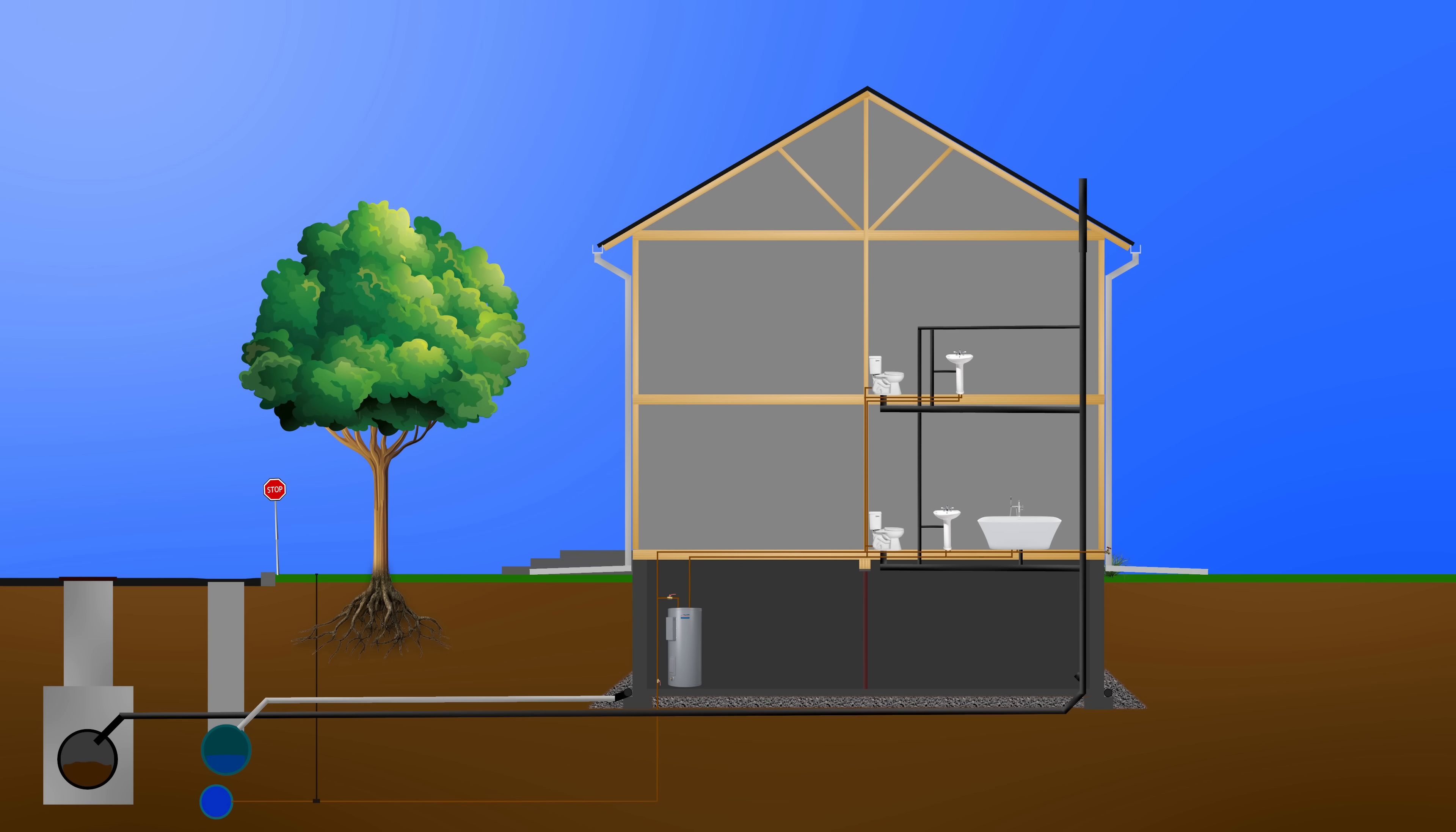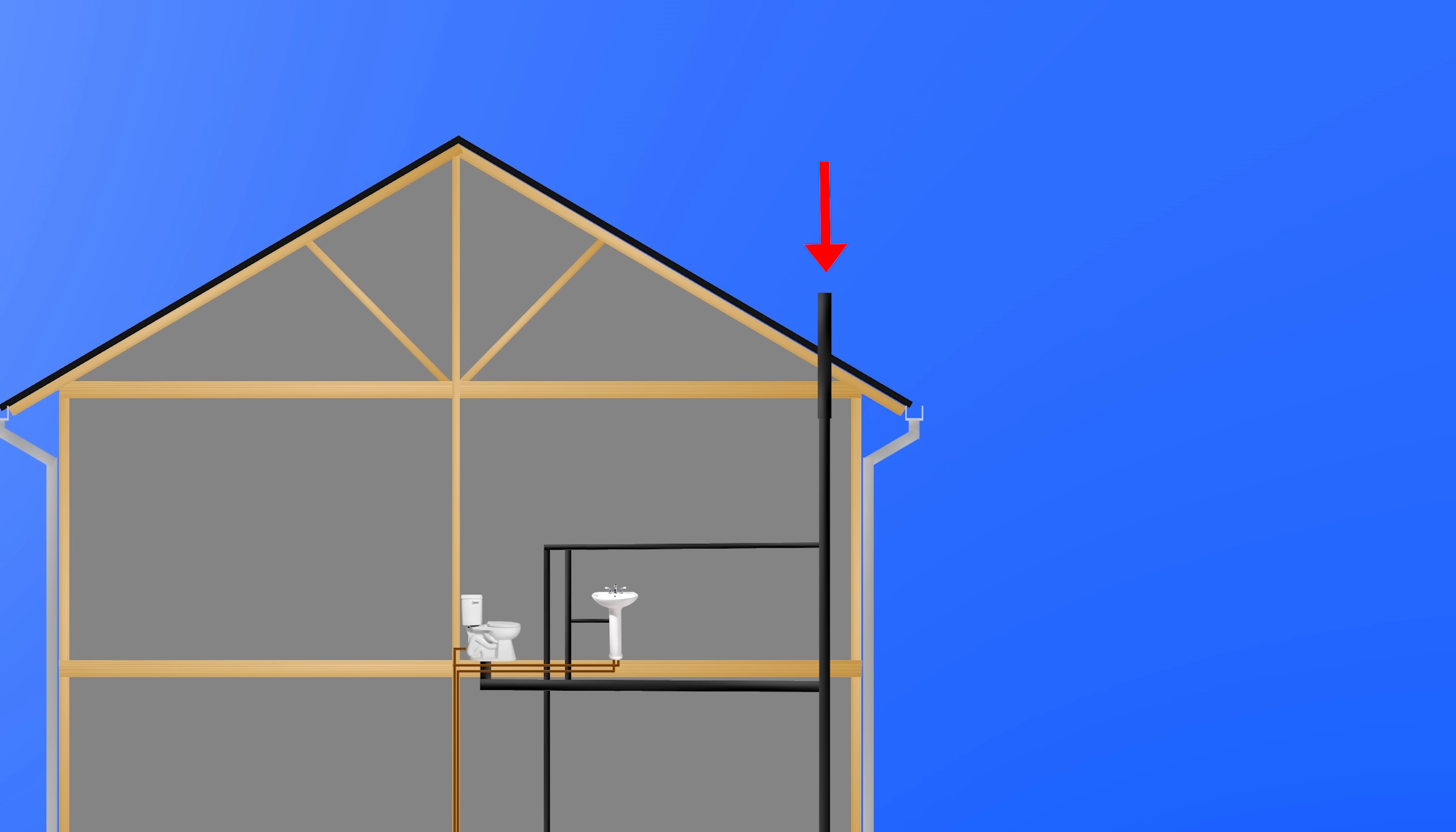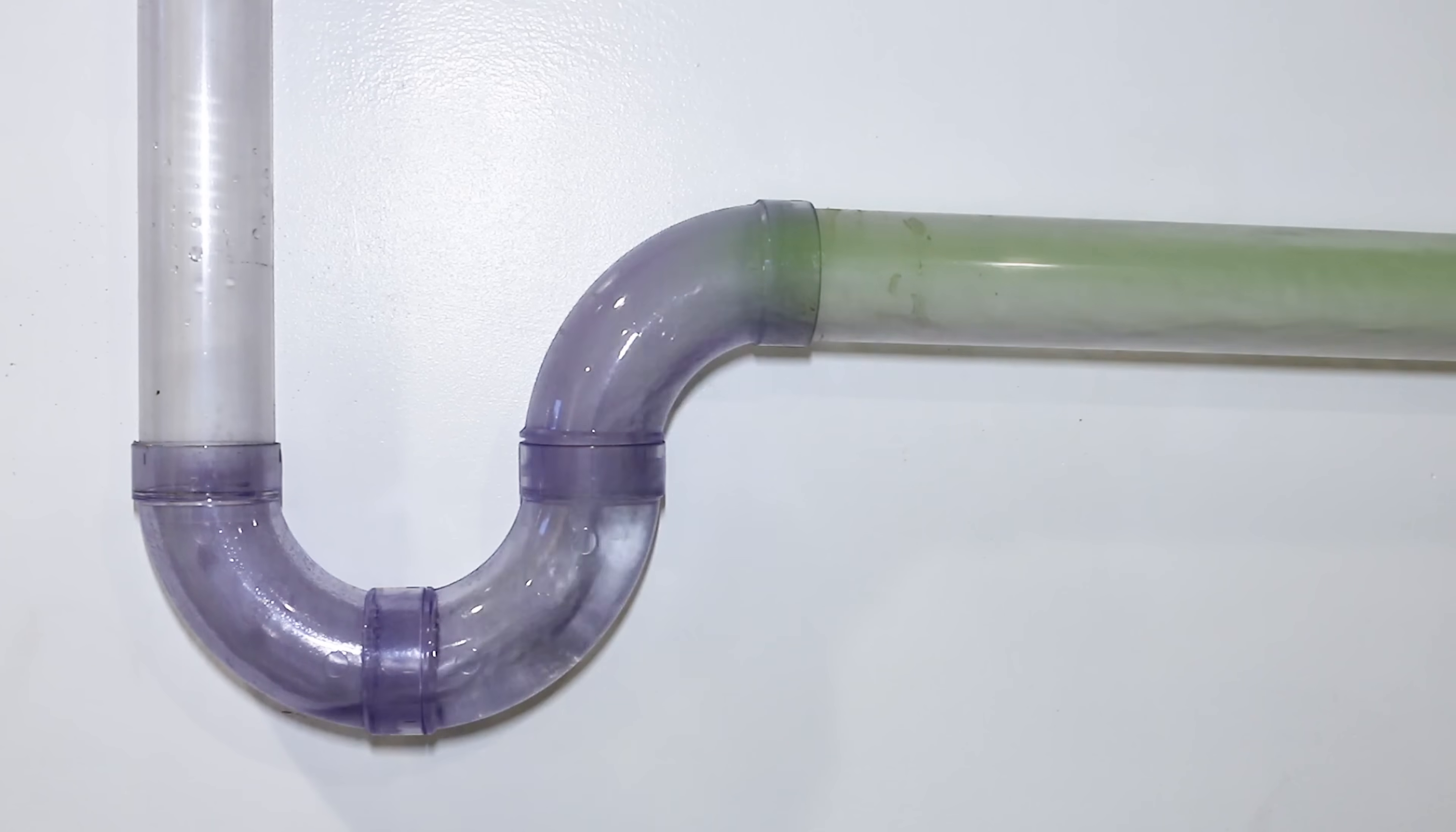Now on to the venting. For these fixtures and drains to function adequately, the system needs to be properly vented. When a toilet is flushed, for example, the water pushes the air downstream, causing a negative pressure behind it. The vents are what equalize this change in pressure to prevent things like gurgling and P-traps being siphoned out, which would allow for sewer gases to find their way inside your home.